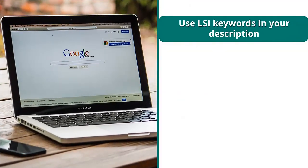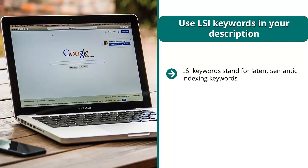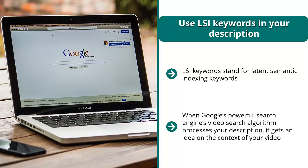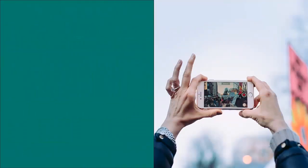Use LSI keywords in your description. LSI keywords stand for latent semantic indexing keywords — these are keywords that are thematically related to your target keyword. When you find the most related keywords to your target keyword and put them in a description that makes grammatical sense and flows naturally, you're creating context. When Google's video search algorithm processes your description, it gets an idea of the context of your video — it's not just some random video that popped up.